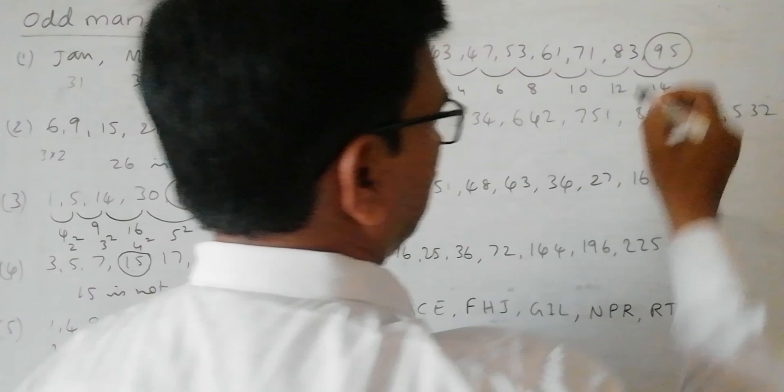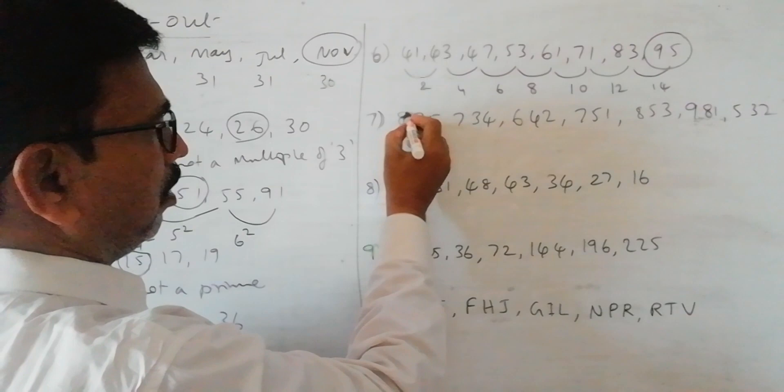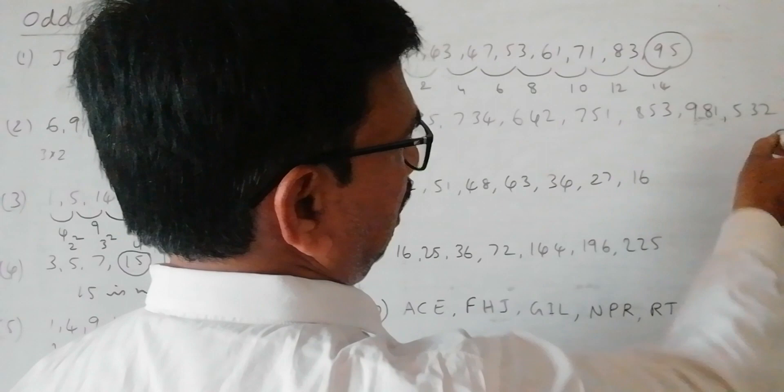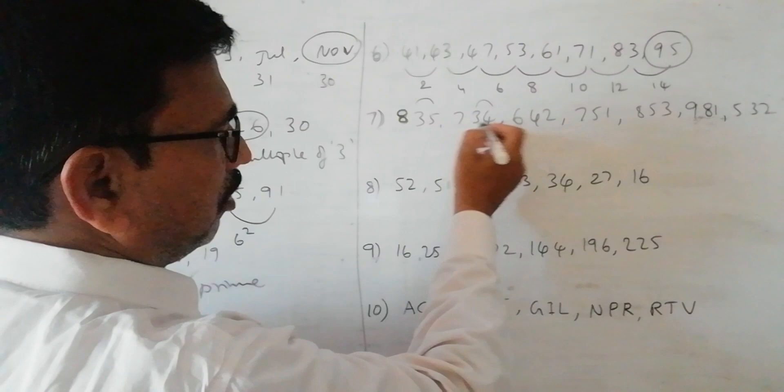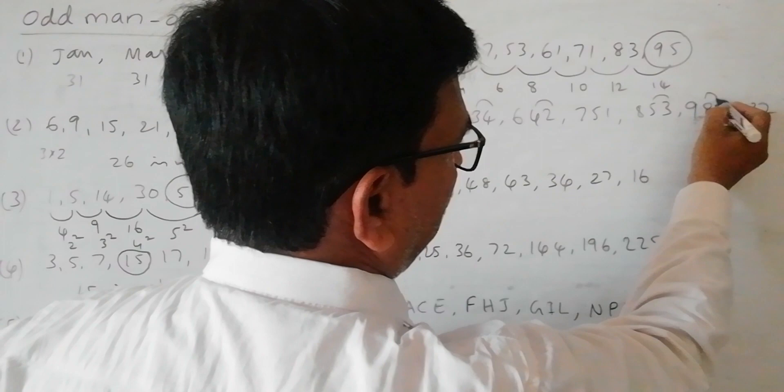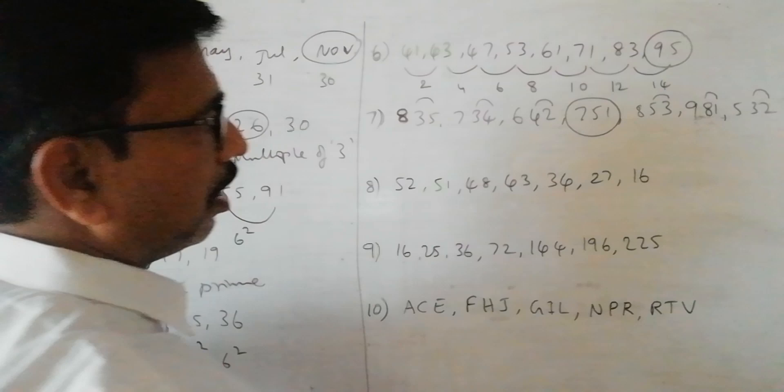Next, this is somewhat typical problem: 835, 734, 642, 751, 853, 981 and 532. Here if you observe a common phenomena, the first digit is the sum of the 2 digits. 3 plus 5 is 8, 3 plus 4 is 7, 4 plus 2 is 6. Here 3 plus 5 is 8, 8 plus 1 is 9, 3 plus 2 is 5. But for this particular number, that rule is not followed. So the odd one is 751.